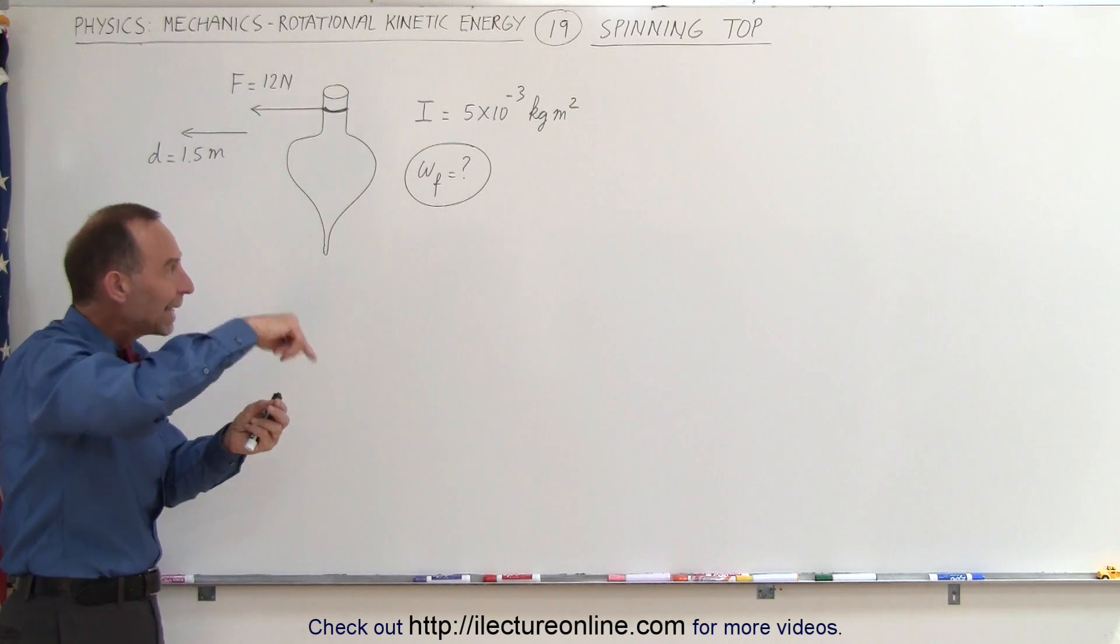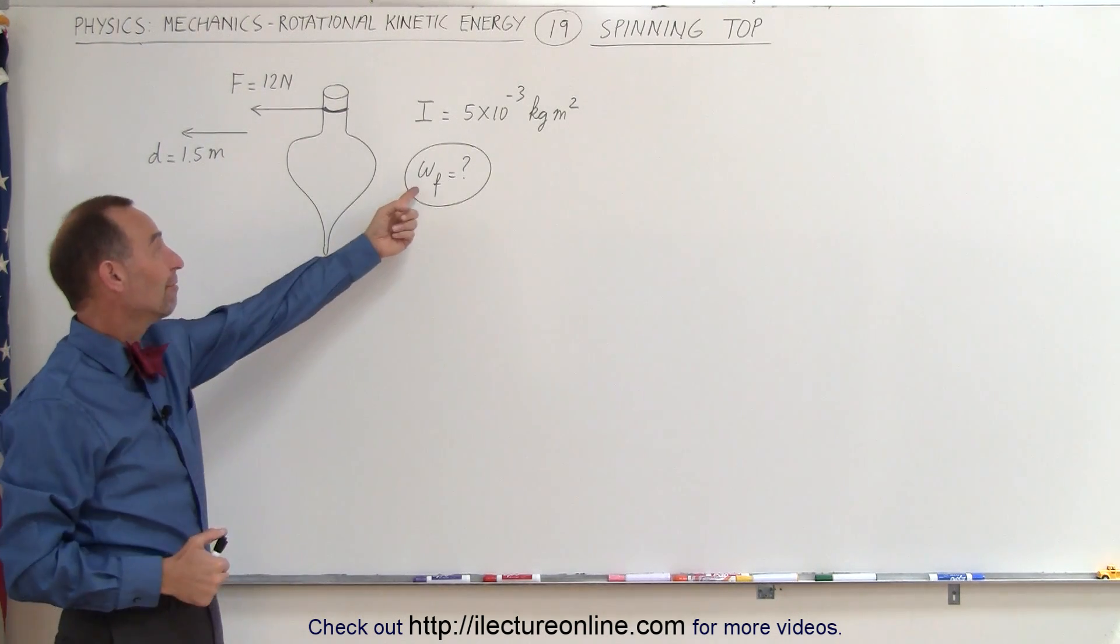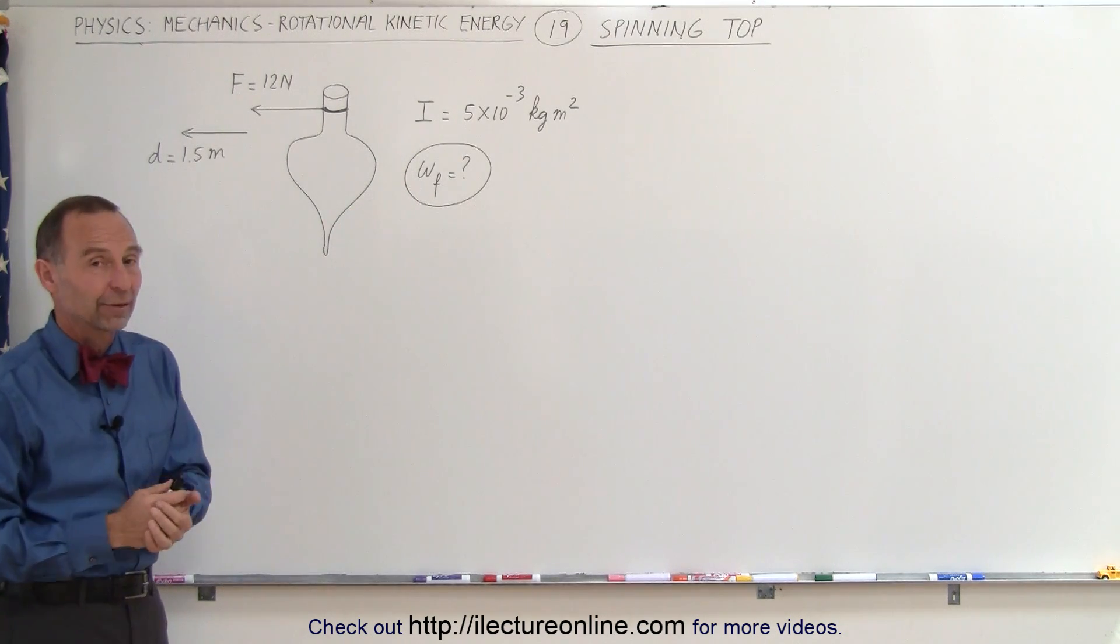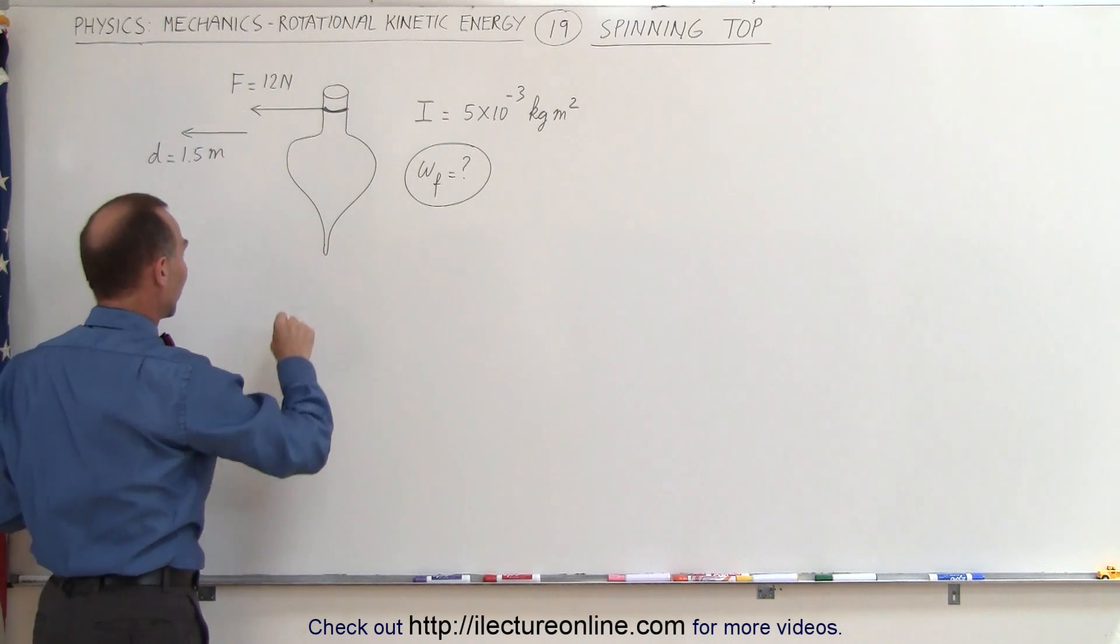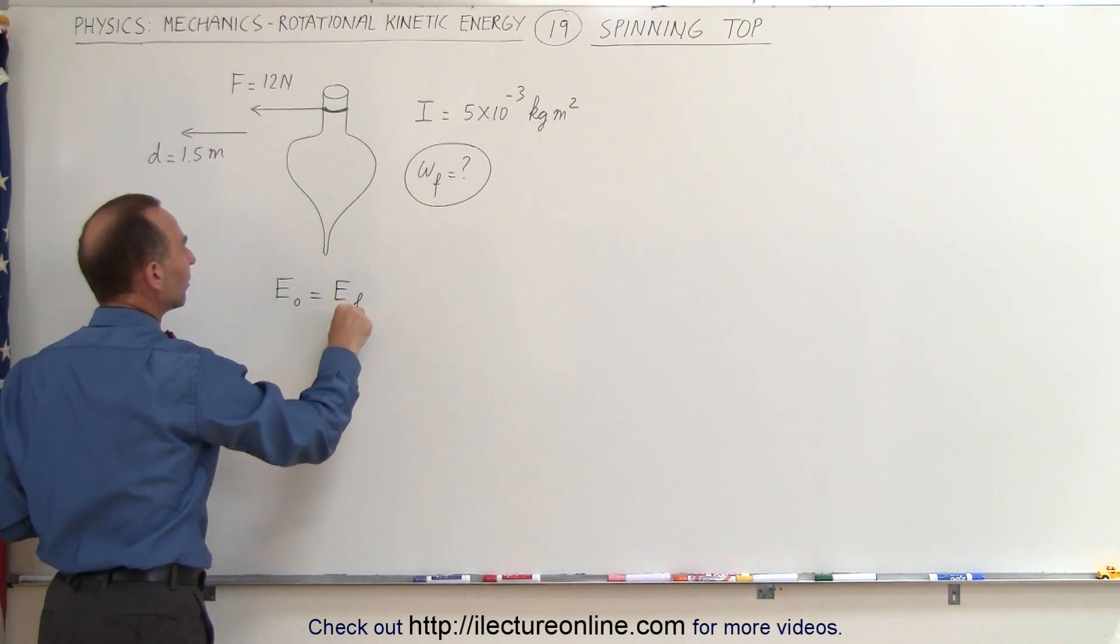So that's the work done to make this top spin. The end result is that it will be spinning at some final omega, some final radial velocity which we're trying to figure out. The way you solve this problem is as any other problem where we have conservation of energy. We can say that the initial energy equals the final energy.